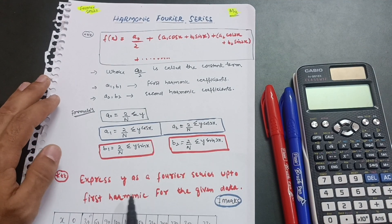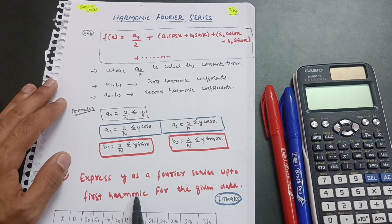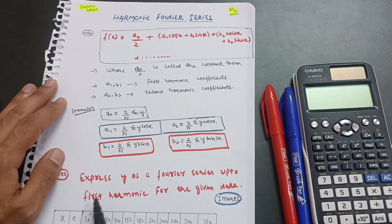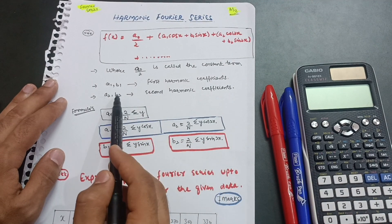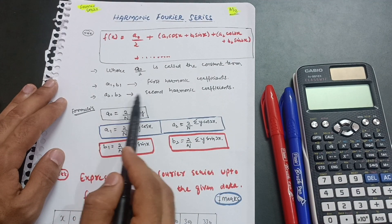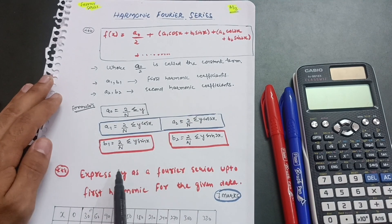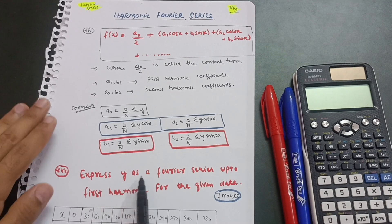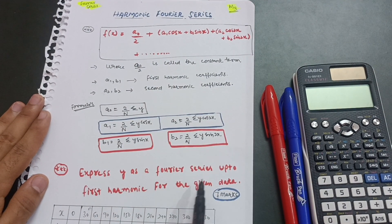The question will specify whether you need to express the Fourier series up to the first harmonic only, or both first and second harmonics. When second harmonic is required, you calculate a₂ and b₂ as well. In this question, I'll take: 'Express y as a Fourier series up to the first harmonic for the given data.'